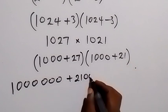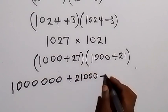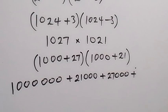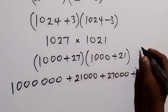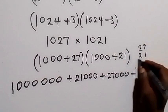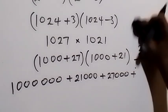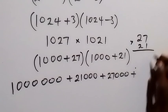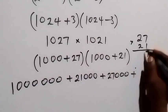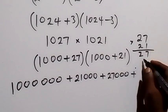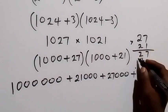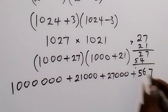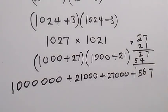Then we multiply 27 times 21. When we calculate this, 1 times 27 gives 27, and 2 times 27 is 54. Two times two is four, plus one is five. Adding these together gives us 567.